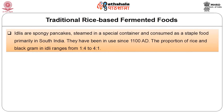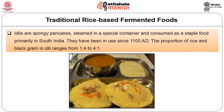Idlis are spongy pancakes steamed in a special container and consumed as a staple food primarily in South India. They have been in use since 1100 AD. The proportion of rice and black gram in Idli ranges from 1:2 to 4:1. The lactic acid bacteria Leuconostoc mesenteroides, Streptococcus fecalis, Lactobacillus delbrueckii, Lactobacillus fermentii and Lactobacillus lactis are responsible for the fermentation process.